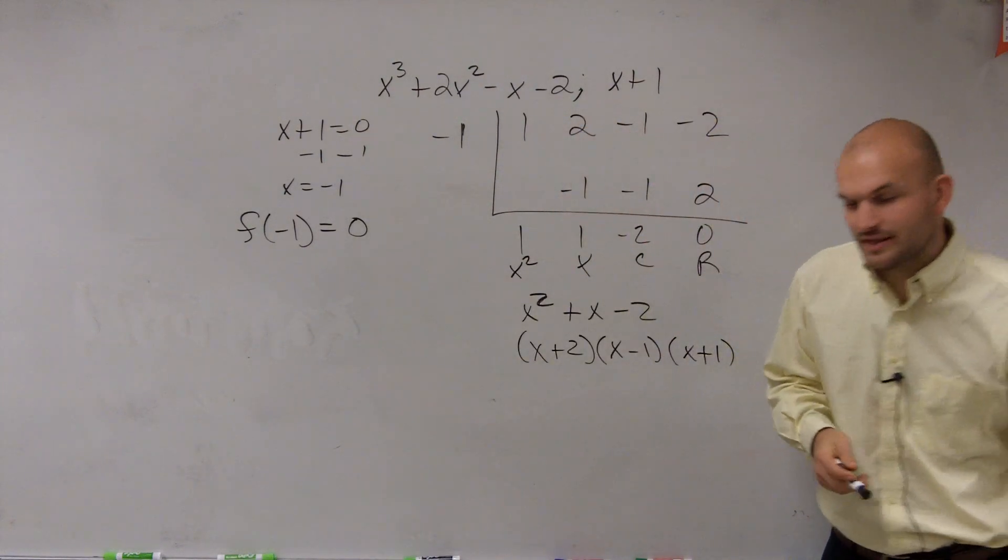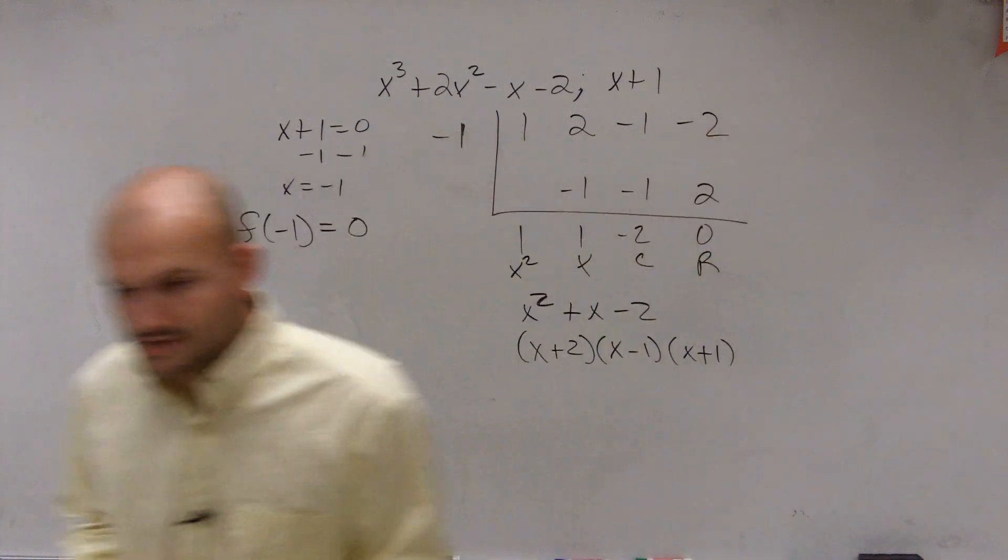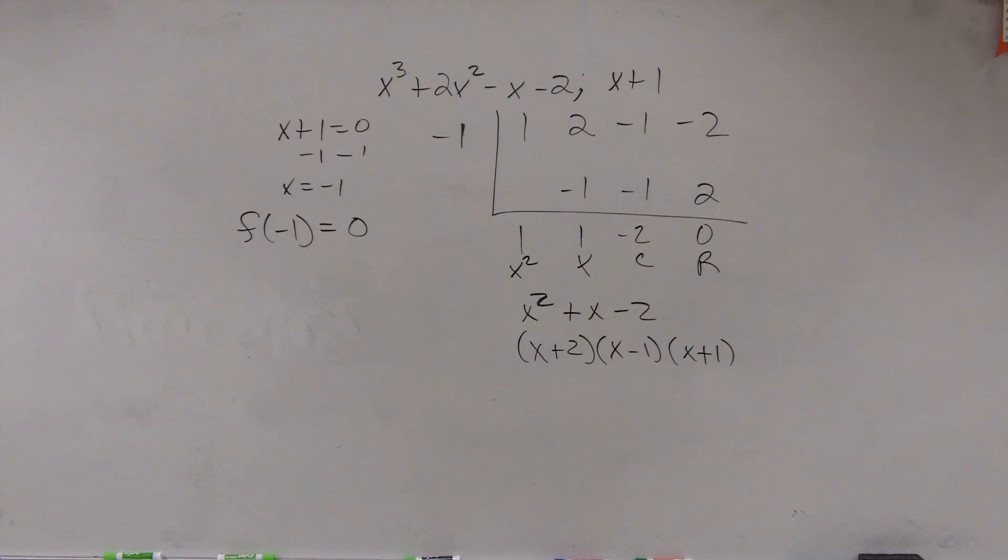So when I say determine if it's a factor and then list all the remaining factors, that's what I'm going to do. If it doesn't come out to a zero, you just put not a factor. You could say your original problem that you gave me is not a factor.